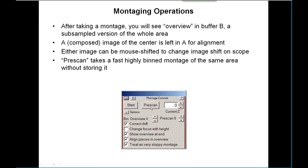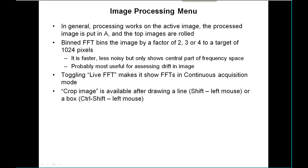Another useful set of tools here is available in the Image Processing menu. In general, anything selected from that menu will work on the active image, not just the one in A. Then it processes the image and puts it like a new image into A and rolls down the top images. One of the options there is to take an FFT. That can get kind of out of hand if you have 4K or 8K images. There's a bin FFT option that can bin the image by a factor of two, three, or four to a size of about a thousand pixels.